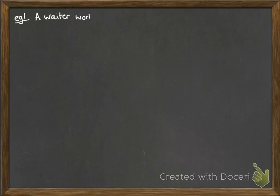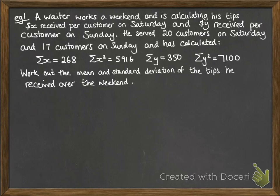So here's our first example. Just take a little while to have a read through that. So we're talking about a waiter working a weekend. He's calculating the tips that he received, and x is referring to the tips received on Saturday and y for the tips from Sunday. He served 20 people on Saturday and 17 on the Sunday, and he's got the summary calculations listed there. We want to work out the mean and the standard deviation of the tips that he received over the whole of that weekend, so we need to put those things all together to work out the mean and standard deviation.